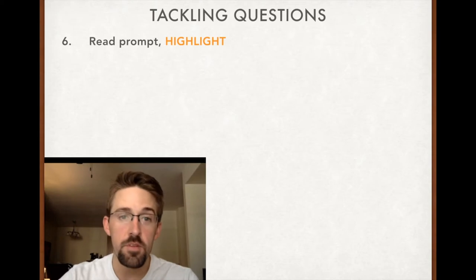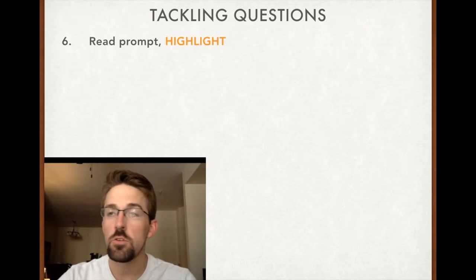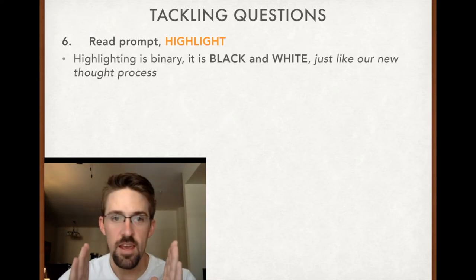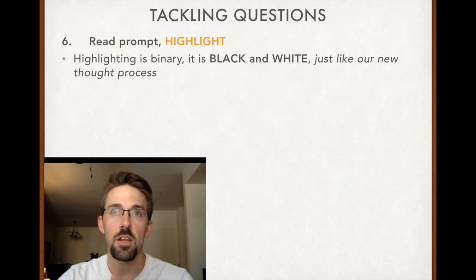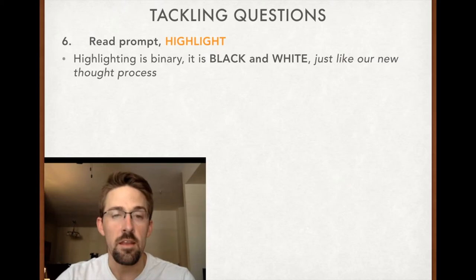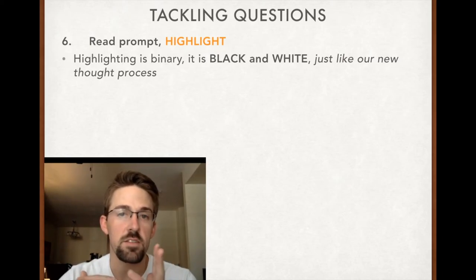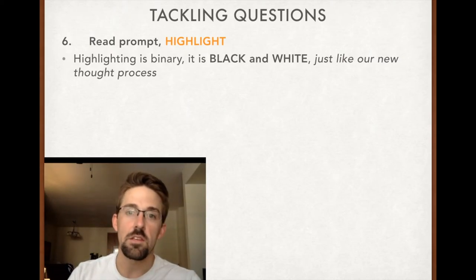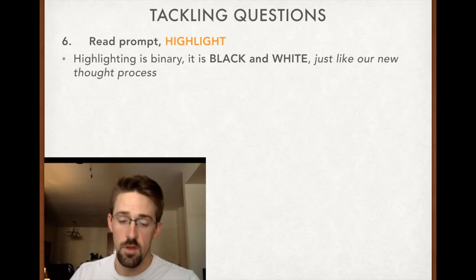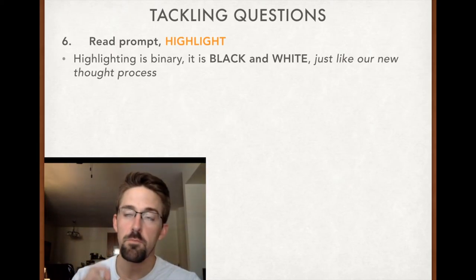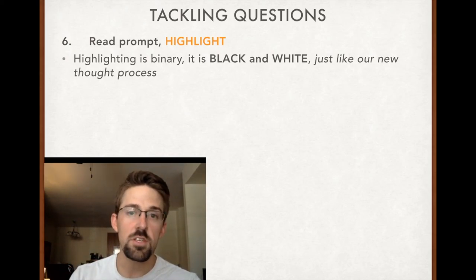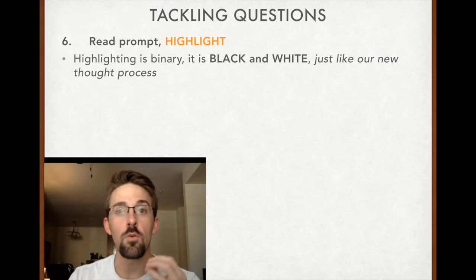Next, we're into reading the prompt and highlighting. This is your most powerful tool in all of test-taking. And the reason being, it's black and white. It's binary. Our new thought process is objective. Things either are or are not indicated or suggested by this stem, by this question. Highlighting is you telling future you here in about 20 or 30 seconds, this is important. This is what it is. If you're highlighting a vital sign because it's low, you're telling yourself this patient's hypotensive. Blood pressure's 70 over 30. You cannot forget that. Use the highlighting to tell yourself what is and is not important, and don't second-guess that.